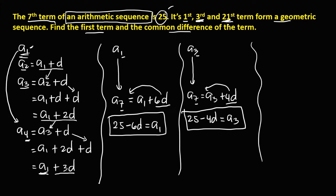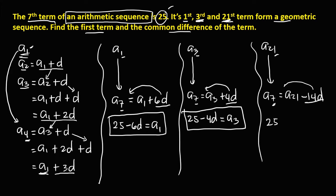For the 21st term, from a21 to the 7th term: a21 plus (7 minus 21) times d equals a7, so a21 minus 14d equals 25. Transposing, a21 equals 25 plus 14d. This is the third equation.